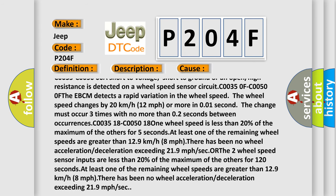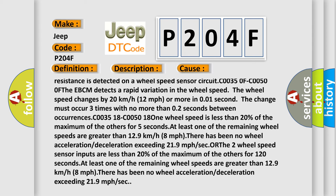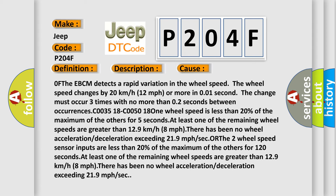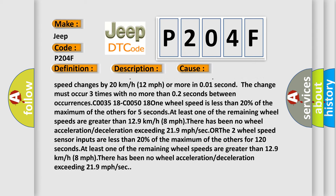The wheel speed changes by 20 kilometers per hour (12 miles per hour) or more in 0.01 second. The change must occur three times with no more than 0.2 seconds between occurrences.